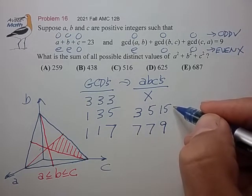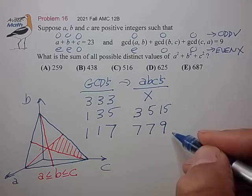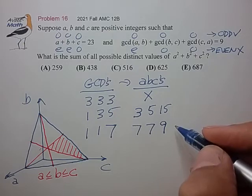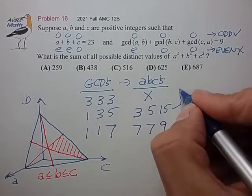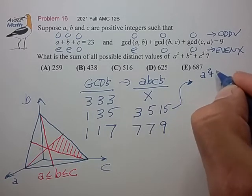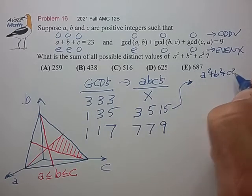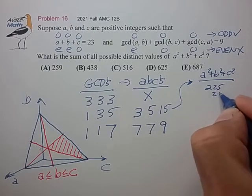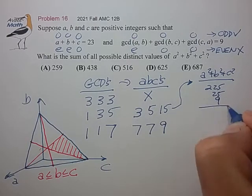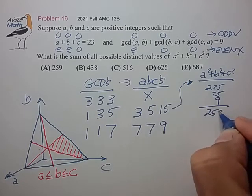So I think there are only two valid patterns of ordered odd numbers that satisfy these problem statements. And in the first case, the sum of squares would be 225, 25, 9, 259.